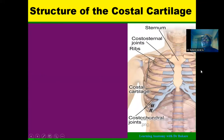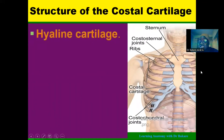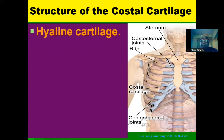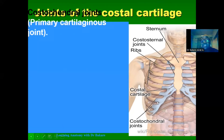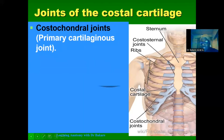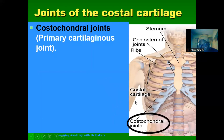Let's look at the structure of these costal cartilages. They are specifically made up of a hyaline type of cartilage, which contains a high number of collagen fibers. Regarding the joints that the costal cartilages form, we have the costochondral joint. The costochondral joint is seen between the ribs and the costal cartilages, in the region where they meet. This joint is a primary cartilaginous joint.